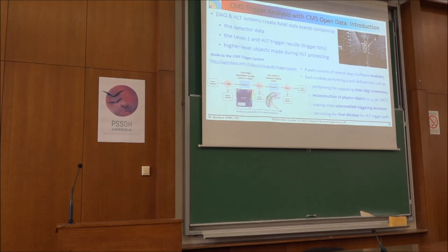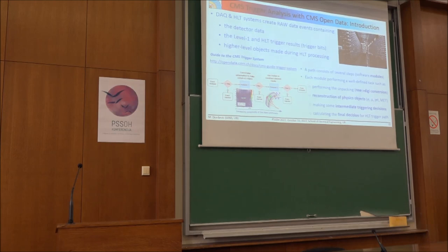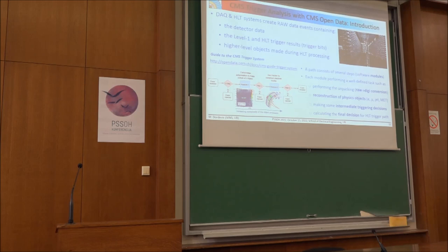Now I will give some more introduction about the trigger system in CMS because this is important for the next example I will show. So what the data acquisition system and the trigger systems are doing, they are creating this raw data which contains the data from the detector itself and the decisions from the level 1 trigger and from the high level 1 trigger stages of selection. This HLT part is run on the computing farm.